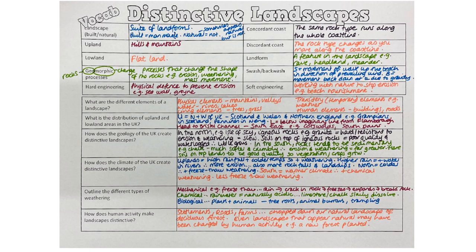We need to be able to talk about how the geology of the UK varies. Up in the north — for example the Isle of Skye — we've got igneous rocks like granite. These are hard, resistant rocks that don't erode or weather easily. The soil on top is poor quality and waterlogged, so there is very little vegetation. Whereas in the south, the rocks tend to be sedimentary like chalk, which is soft and crumbly, so erosion and weathering happen much faster, the soil is better quality, and we get lots of vegetation and crops.